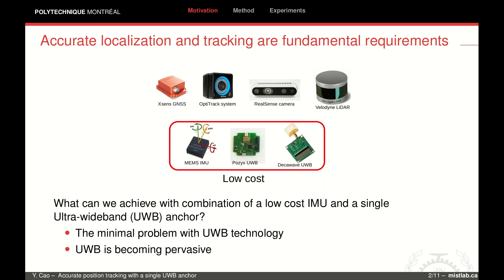Today, almost every smart device has an IMU. UWB technology is also becoming pervasive. The latest Apple iPhone is equipped with a UWB chip for spatial awareness. We believe that a localization solution which relies only on IMU and UWB is highly desirable.